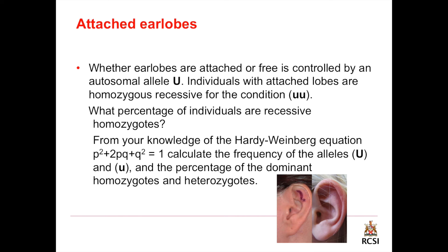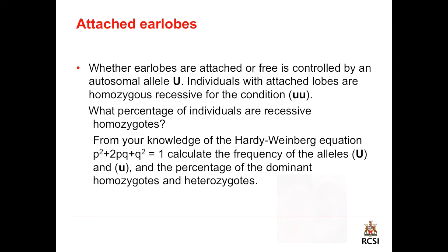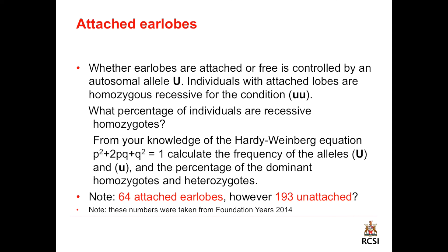From your knowledge of the Hardy-Weinberg equation p squared plus 2pq plus q squared equals 1, calculate the frequency of the alleles capital U and small u, and the percentage of the dominant homozygous and heterozygous. Note that we have 64 attached ear lobes and 193 unattached ear lobes.